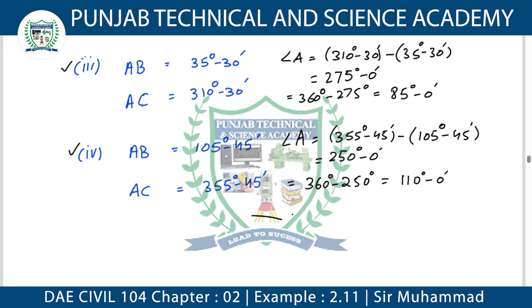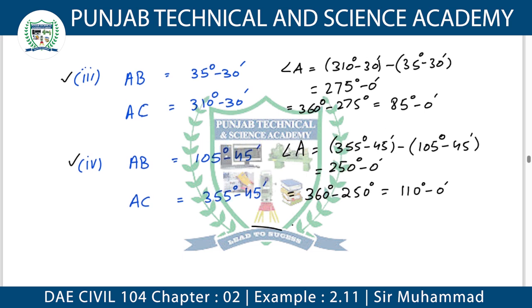In summary: first we take the larger value and subtract the smaller value to find the difference. If the resulting bearing is greater than 180 degrees, then it is not our interior angle — it is the exterior angle. In that case, subtract it from 360 degrees to get the interior angle. But if after subtraction the value is less than 180 degrees, then it is the interior angle directly.